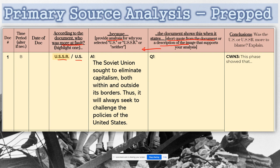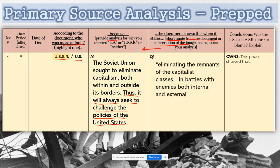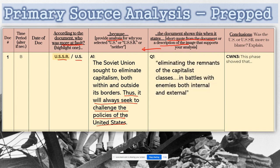The analysis would look something like this: 'The Soviet Union sought to eliminate capitalism both within and outside its borders. Thus, it will always seek to challenge the policies of the United States.' That is analysis — it's an interpretation of the document. You then support it with a quote: 'The Soviet Union says eliminating the remnants of capitalist classes in battles with enemies, both internal and external.' That's document number one.